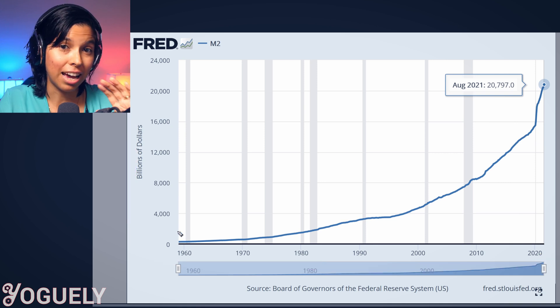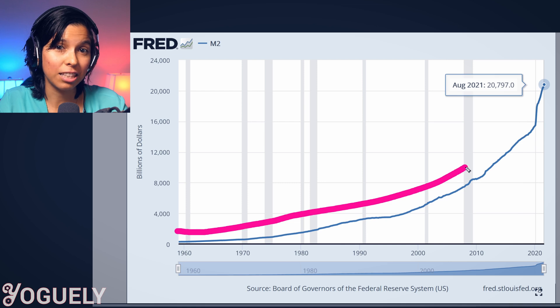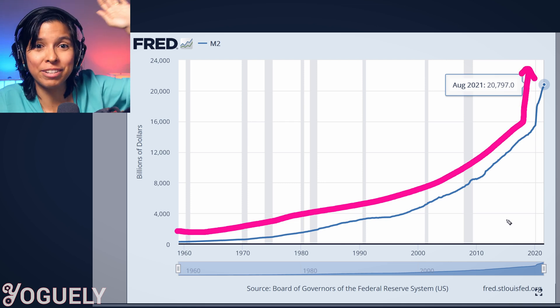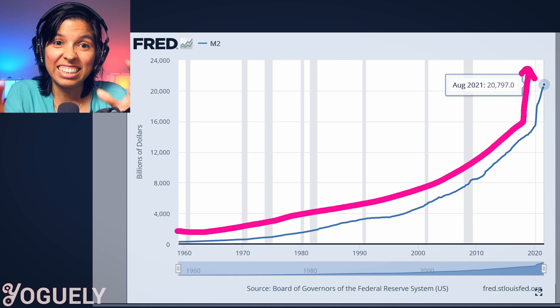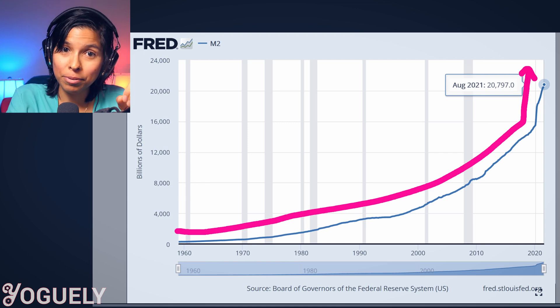As we can see, it has been going up slowly and steadily in the past, and recently it has taken off almost exponentially. Since 1959, the money supply has gone up over 7,000 percent — 7,000!